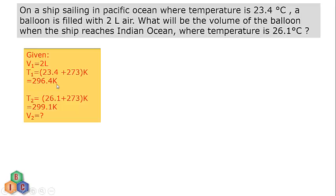Then the next thing given to us, temperature of the Indian Ocean is found to be 26.1 degree Celsius. So T2 is given to us. Let us convert this also into Kelvin scale. 26.1 plus 273 will give the value as 299.1 Kelvin.